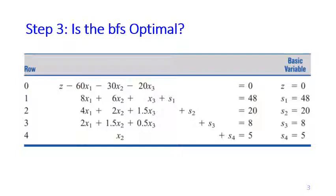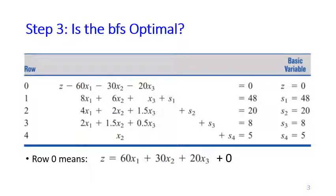This is the BFS we obtained from step two in the previous video, based on the Dakota furniture problem where the objective function is to maximize revenue. If we rearrange row zero by moving all variables to the right-hand side as we usually write objective functions, row zero means z equals 60x1 plus 30x2 plus 20x3 plus zero, where the last zero is the constant.